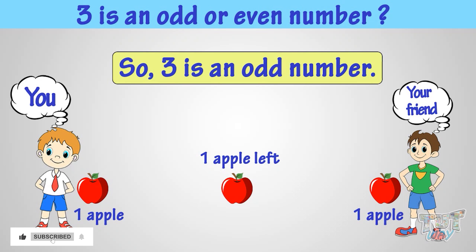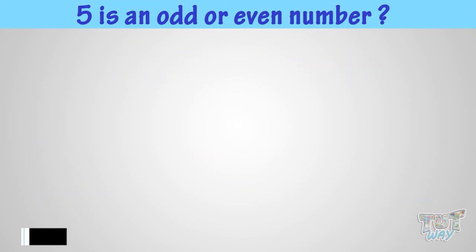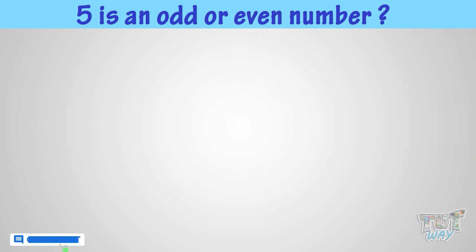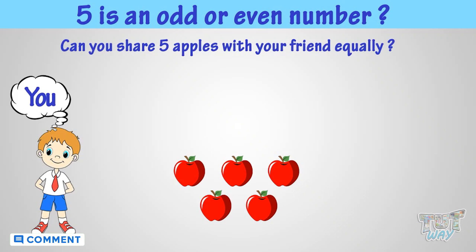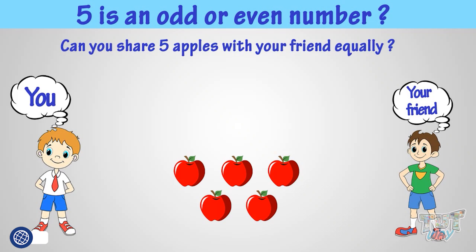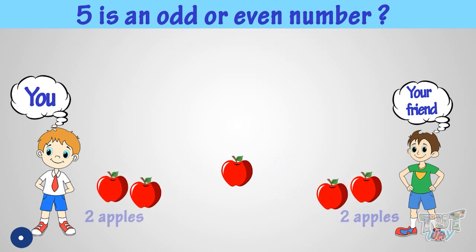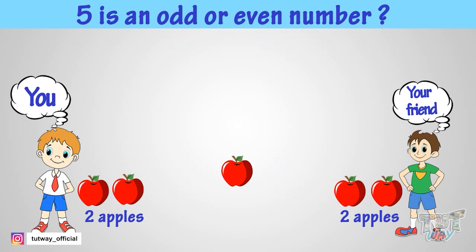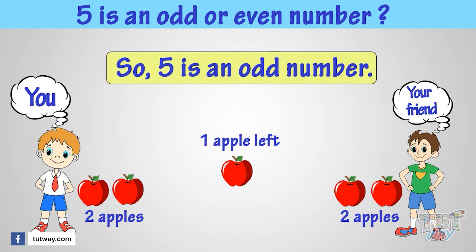Let's see if 5 is an odd or an even number. Can you share 5 apples with your friend equally? You can't, as one apple is left. So, 5 is an odd number, or 5 apples are an odd number of apples.